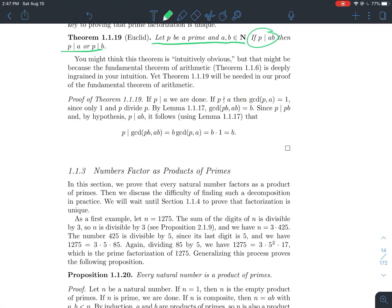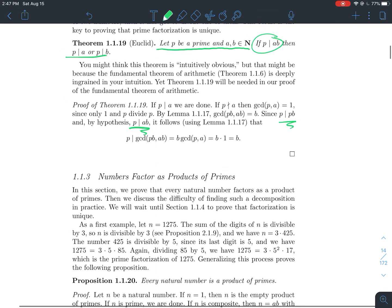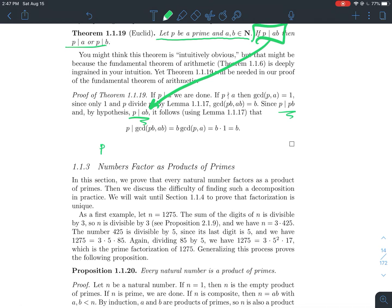Now, of course, p divides p times something else. And by hypothesis, p divides a times b, if you read the statement of the theorem. We'll use that right here. Well, then p has to divide the GCD of pb and ab, has to divide that.